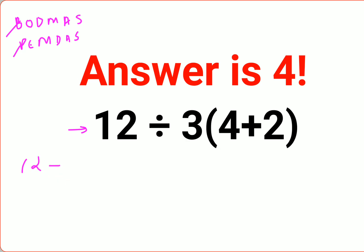So we'll keep 12 divided by 3, and since there's no sign between the 3 and the bracket, that means it's multiplication. 4 plus 2 is 6.